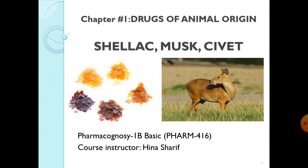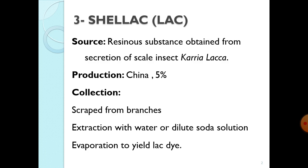In today's lecture, we will discuss shellac, musk, and civet — three crude drugs obtained from animals. We have already covered two animal drugs, honey and gelatin. The third drug obtained from an animal is called shellac.